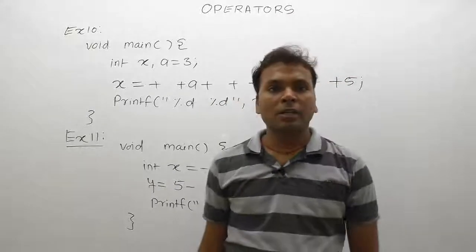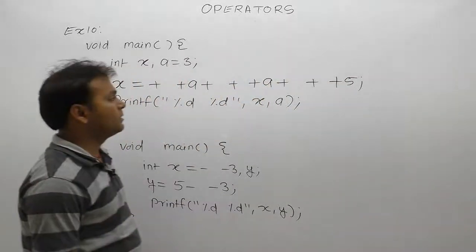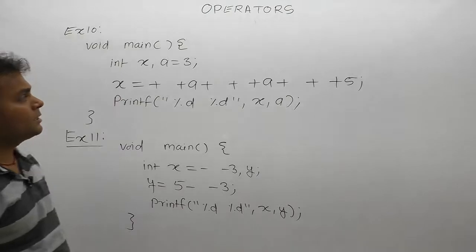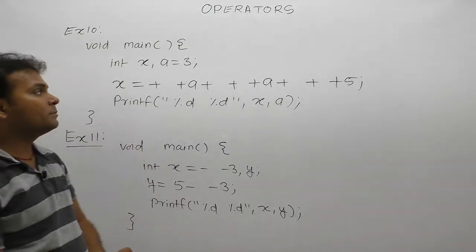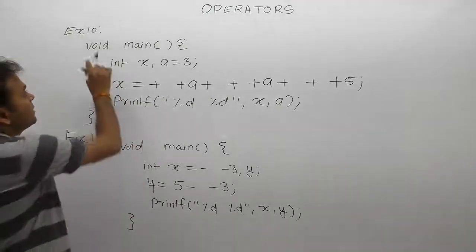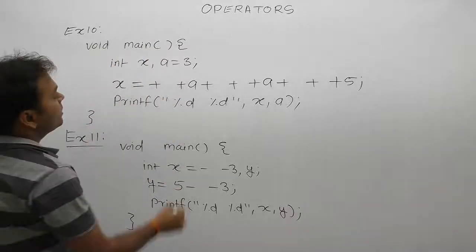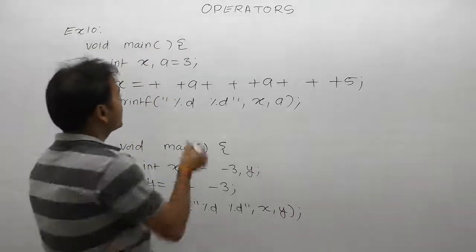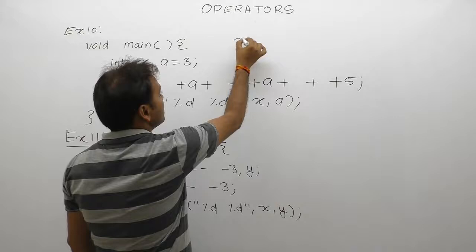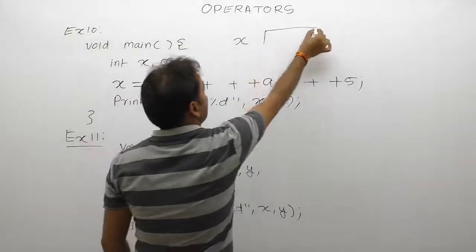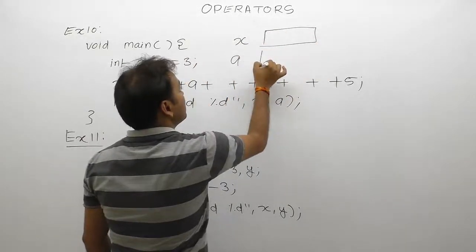Let's look at some more examples regarding arithmetic operations. Here we are mixing some unary as well as binary plus operators. In the first example, there are two variables x and a, therefore memory allocation for x and memory allocation for a.